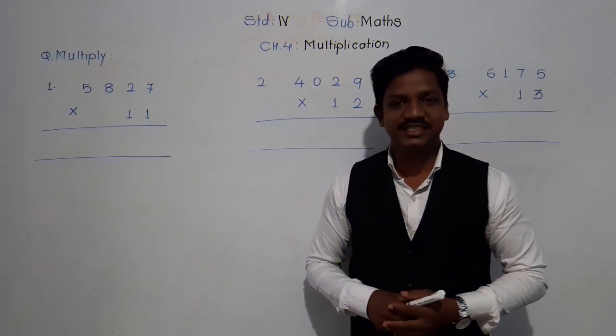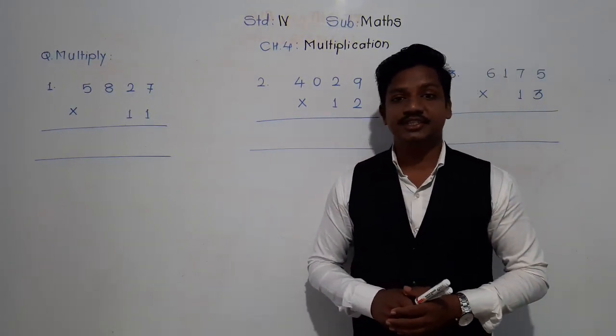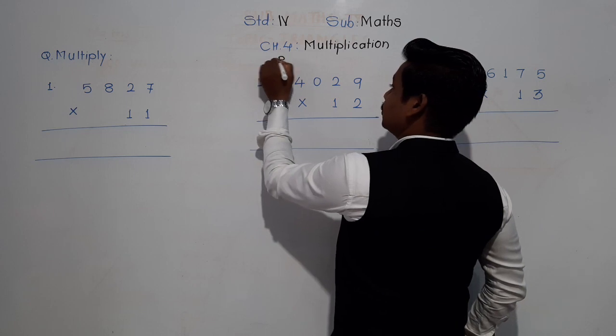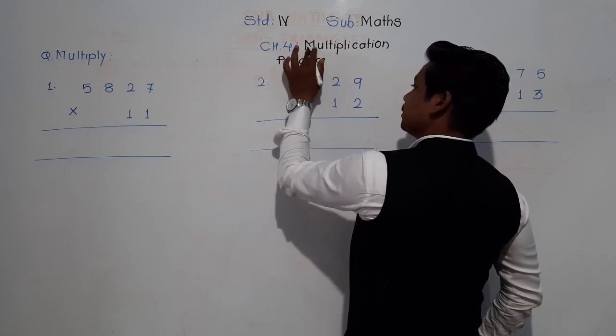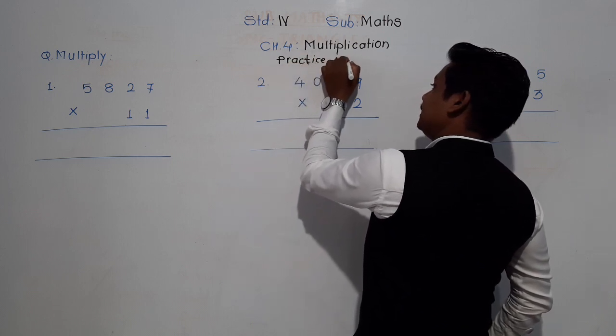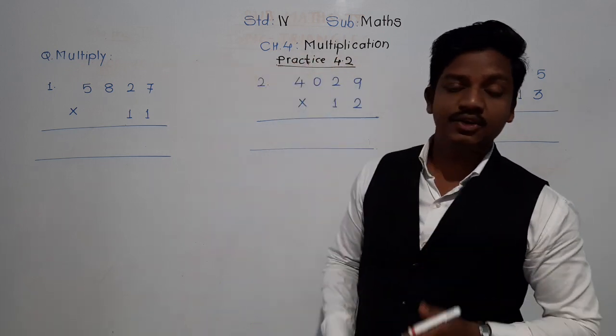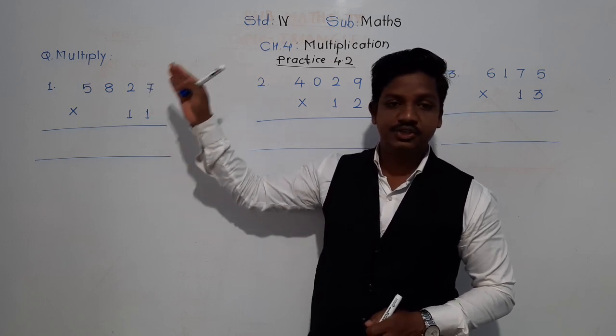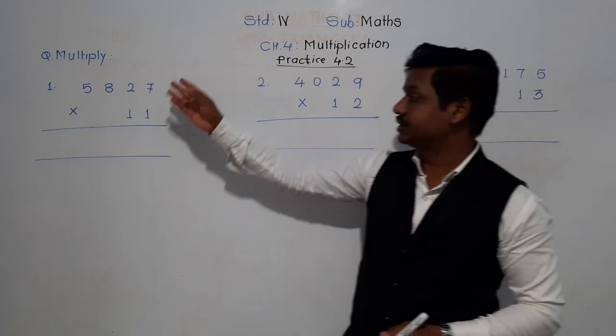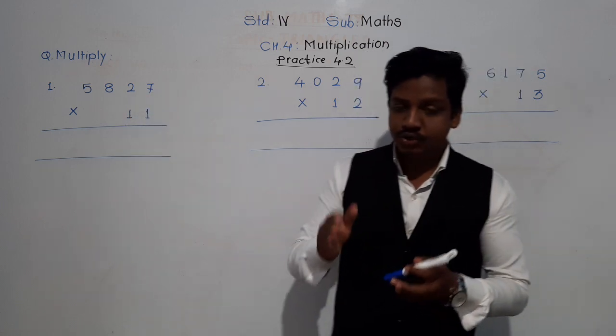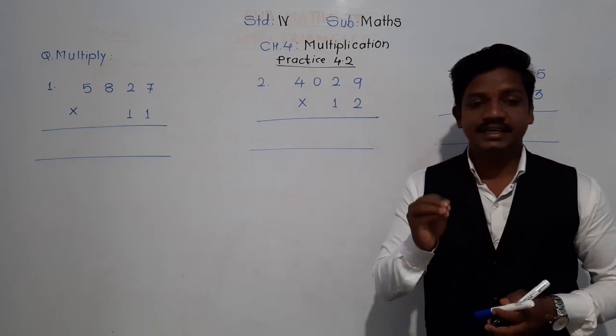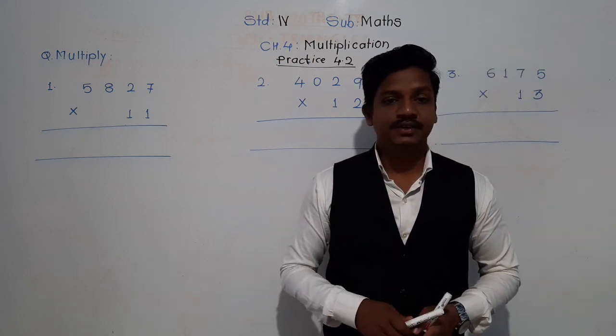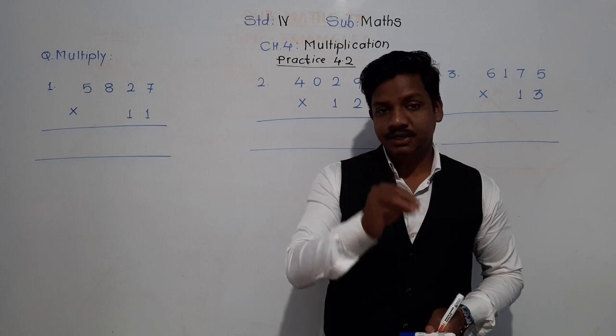Good morning students, welcome for today's video lecture of maths. In today's lecture, we are going to solve practice 4.2, in which we are going to learn to multiply 4 or 5 digit numbers by 2 digit numbers, that is 11 to 20. You know this year we have to recite tables through 20, so in this practice 4.2 we are going to multiply the given numbers by numbers from 11 to 20.